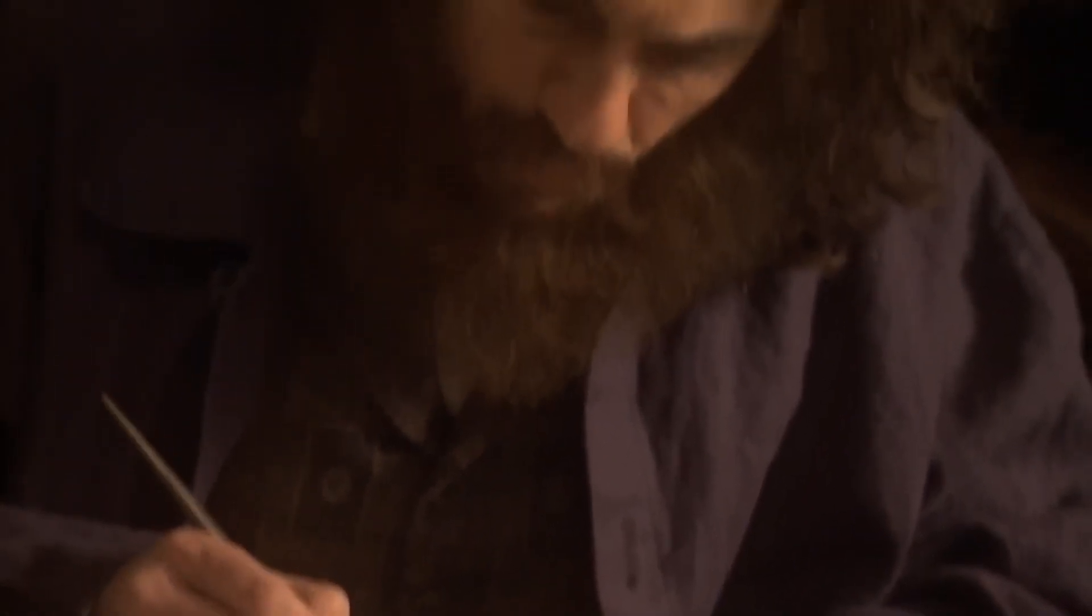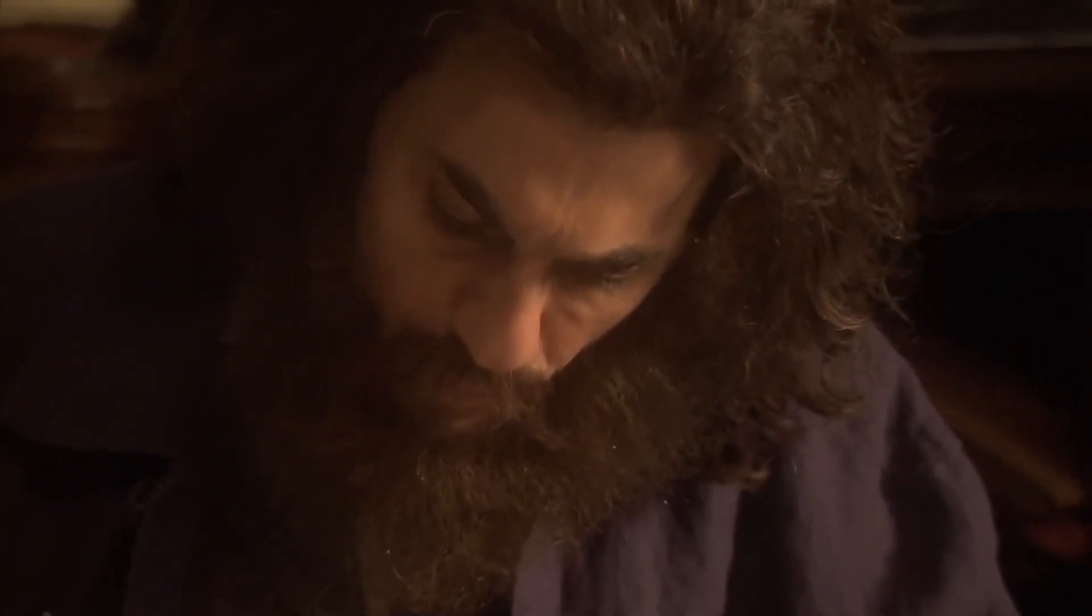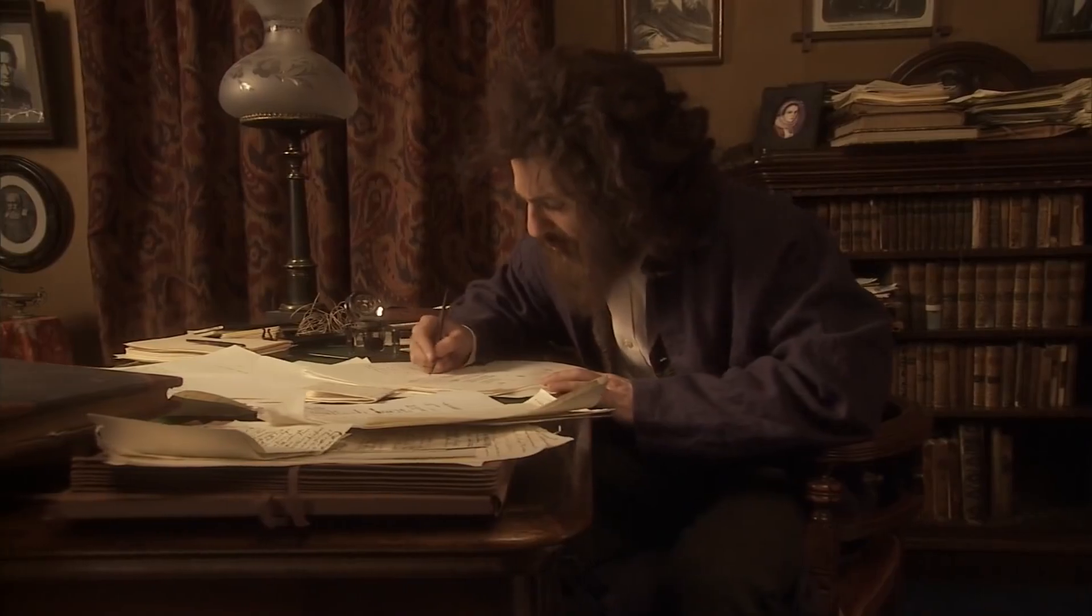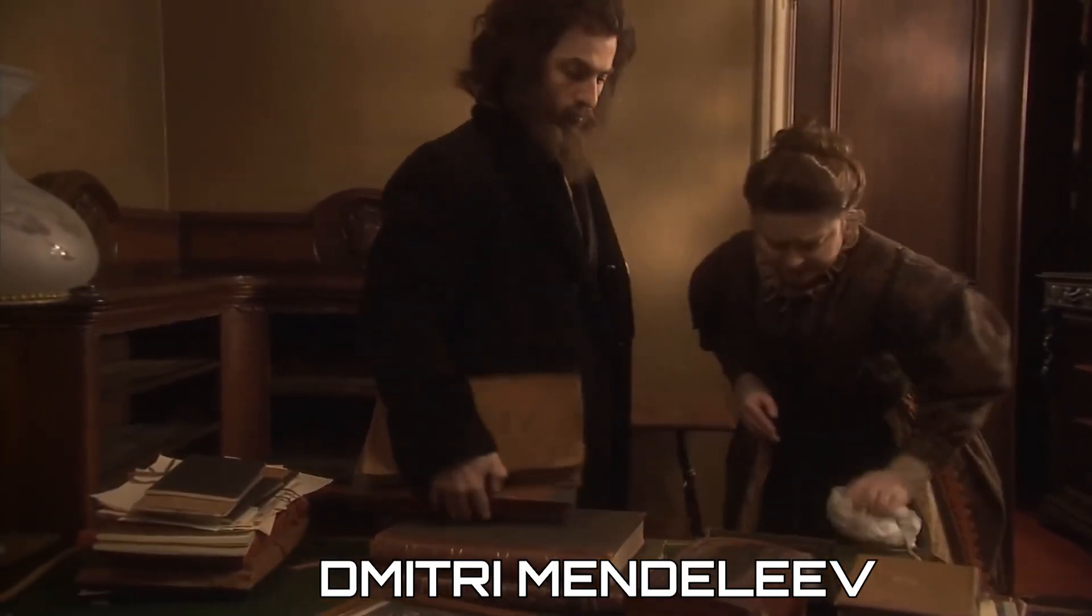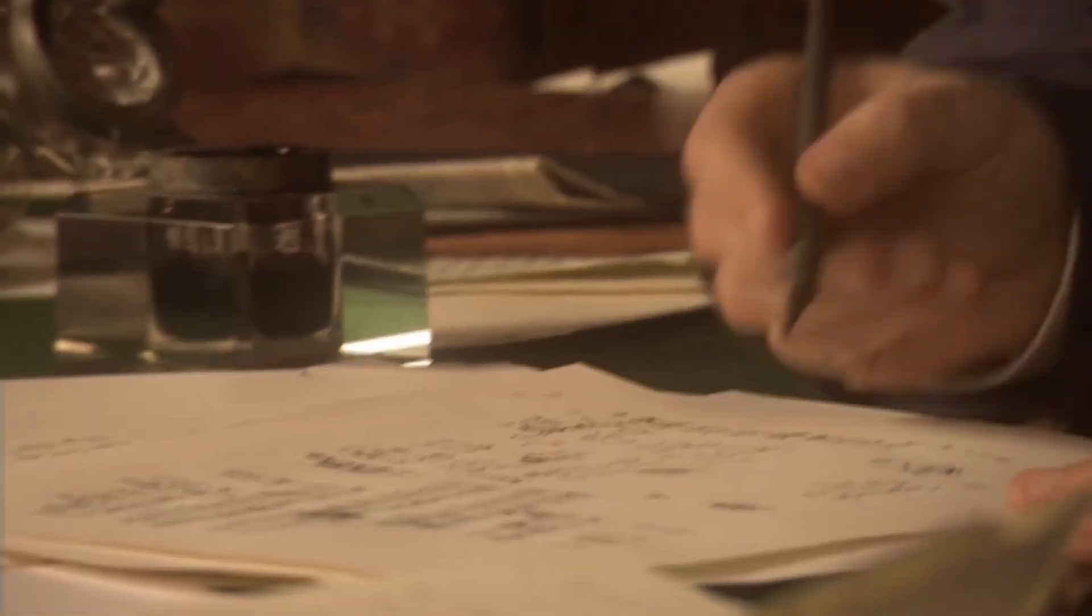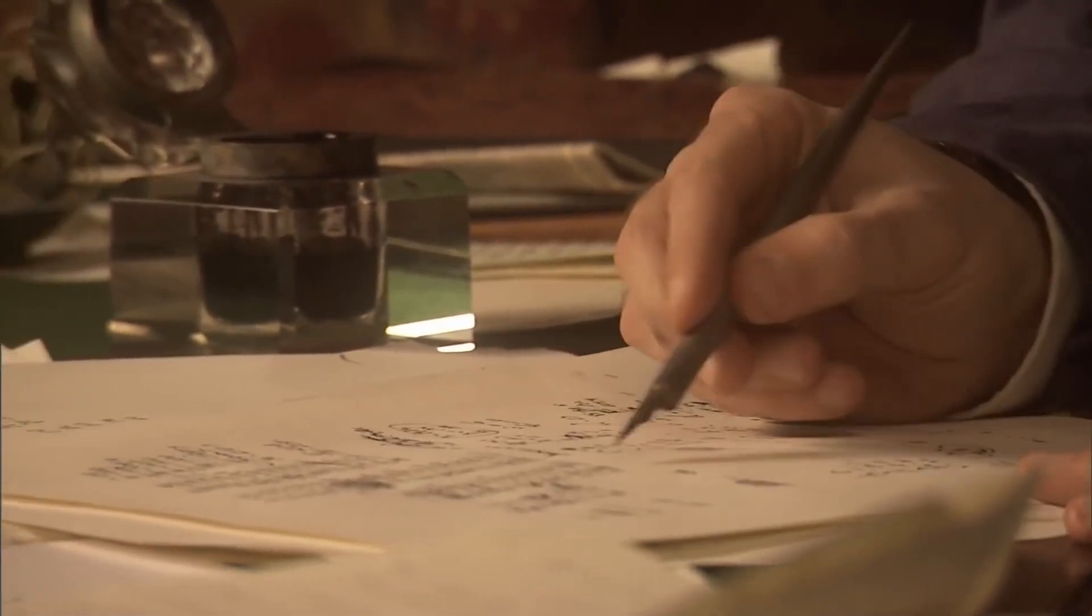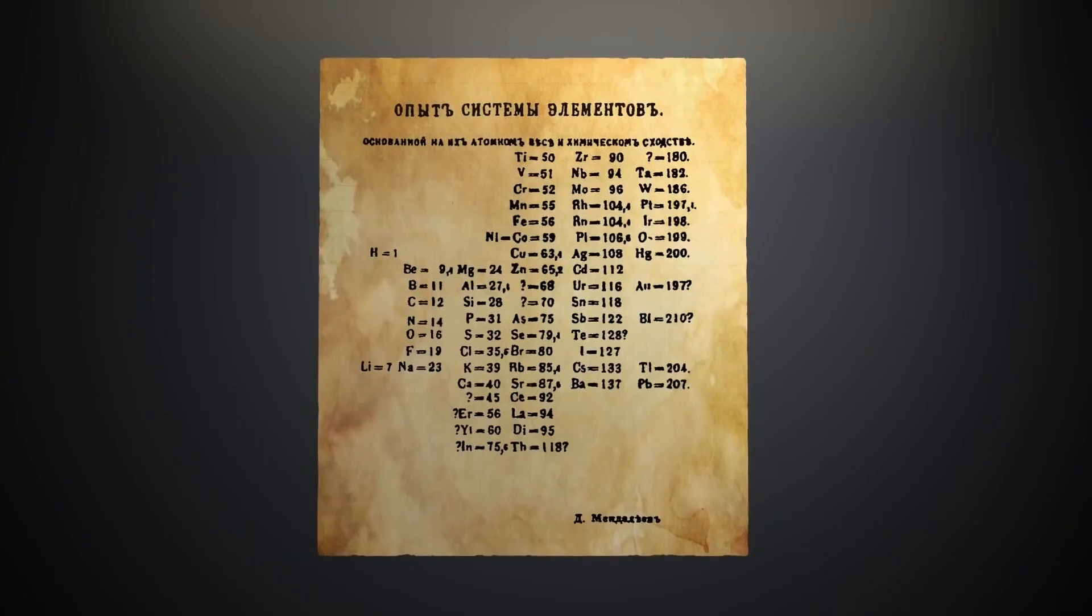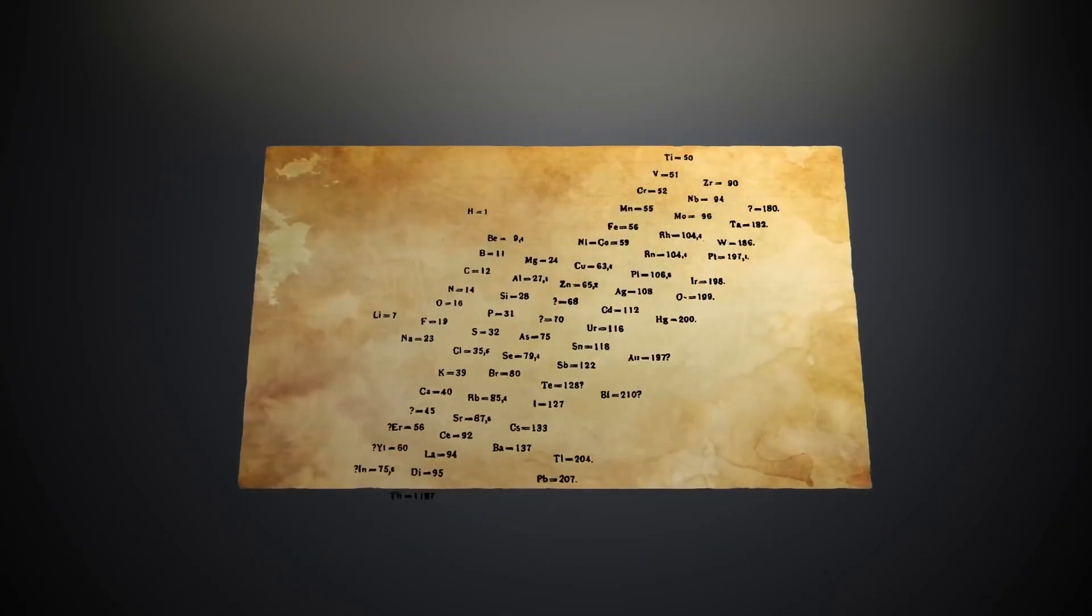The man who would finally bring order to the elements was a young Russian chemistry professor named Dmitry Mendeleev. Dmitry Mendeleev, the Russian chemist, is credited with creating the first version of the periodic table. He organized the elements by their atomic mass and observed that elements with comparable properties aligned in rows. It's this pattern that gives the periodic table its name.